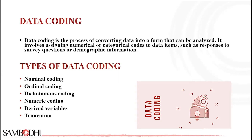Data coding is the process of converting data into a form that can be analyzed. It basically involves assigning numerical or categorical codes for data items, such as responses to survey questions or demographic information. Coded data can then be analyzed using statistical software or other tools.